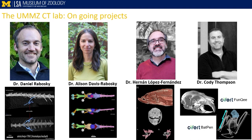Just to broadly go over a few of the research projects happening at UMMZ: in Dr. Dan Roboski's lab, they're using CT scanning to study limb reduction in skinks — talk to Natasha, as that's literally her PhD. In Dr. Allison Davis Roboski's lab, we're looking at snake neural anatomy and venom gland delivery systems. In Hernan's lab, they're looking at the evolution and diversity of jaw structures in fish. In Cody's group, there are two big scanning efforts: the funky project and the bat pen project, where we're scanning every rodent and every bat and making those data available via MorphoSource and other repositories.